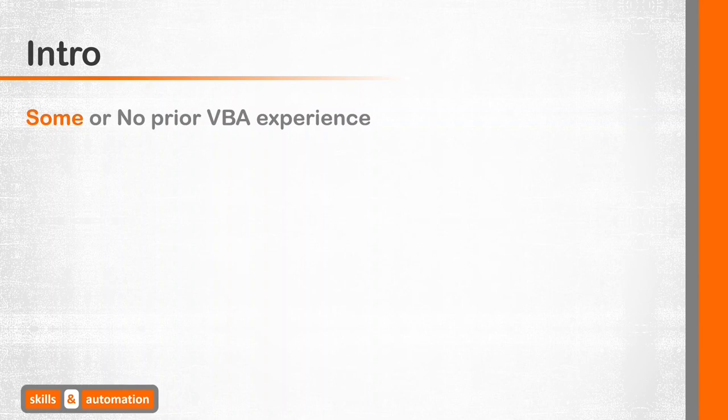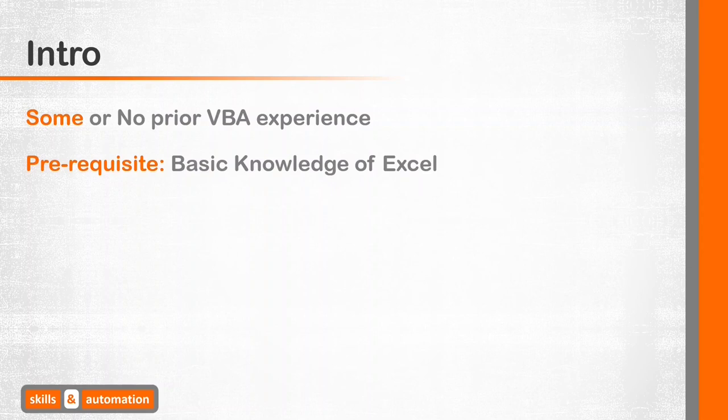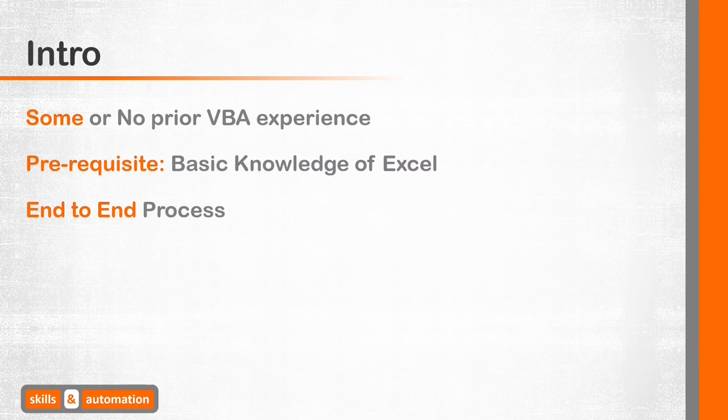You may have some or no prior VBA experience — no problem. We will start from the very beginning. Once you complete this project, you will have gained a beginner to intermediate level skill set in VBA. As a prerequisite, a beginner level knowledge of Excel is required. The final outcome is a full-fledged end-to-end project, feature-packed with a variety of VBA code. We'll start off by covering some basic concepts and then dive straight into the code — the idea is to get your hands dirty right off the bat.